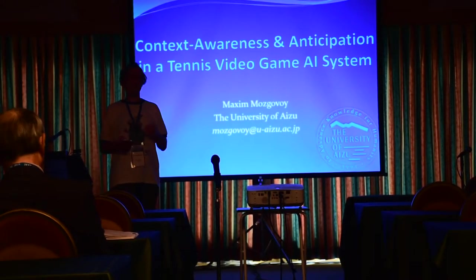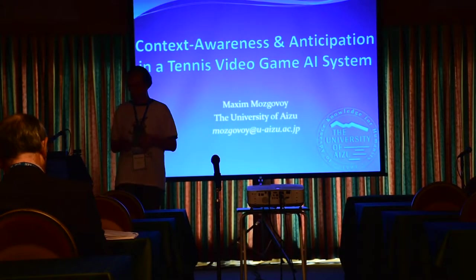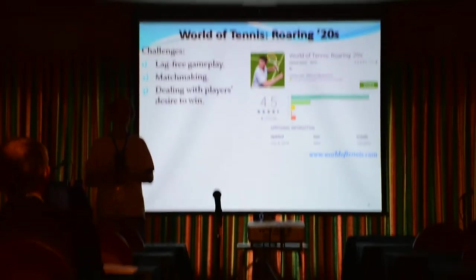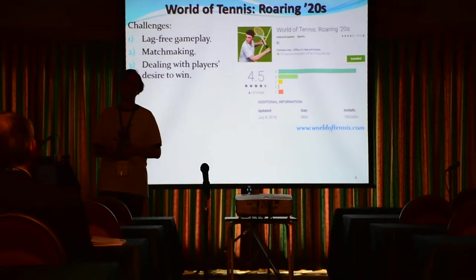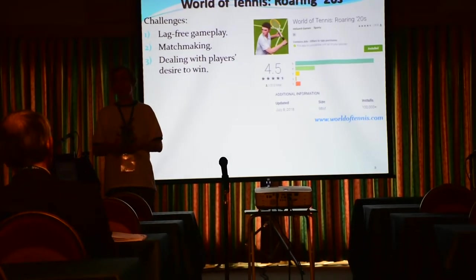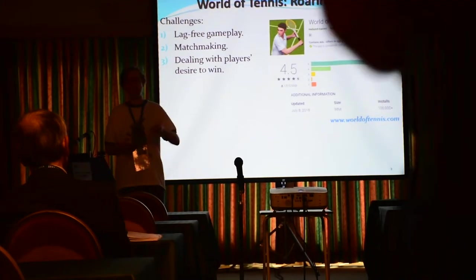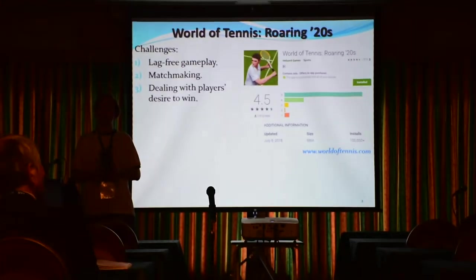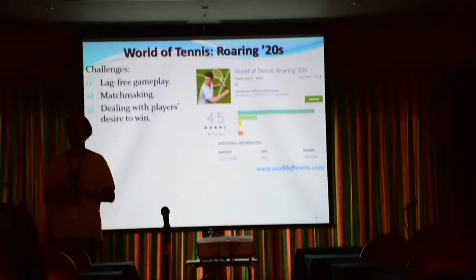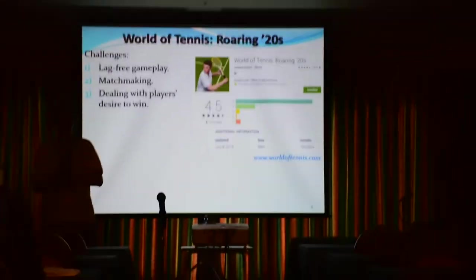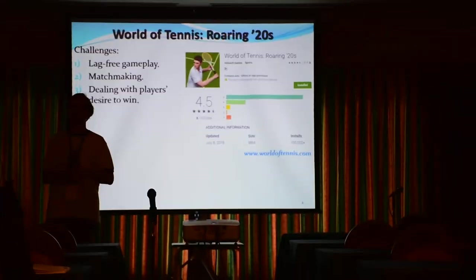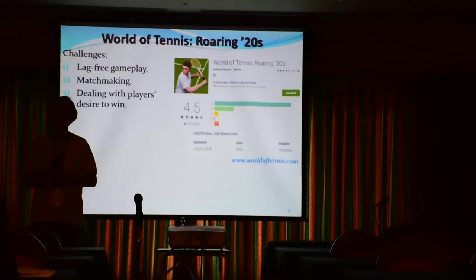Recently I was asked by my friends from Helium 9 Games to design such an AI for their mobile game of lawn tennis, which is called World Tennis Roaring Twenties. As you can see, this game was already released last spring — late spring, in May. It's doing not so bad now. We have more than 100,000 downloads on Android platform and comparable numbers on Windows Mobile and on iPhone and iPad.